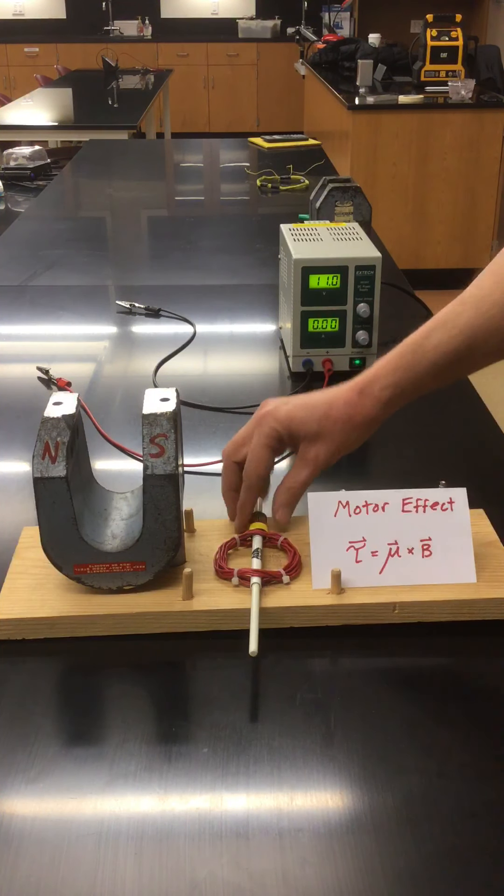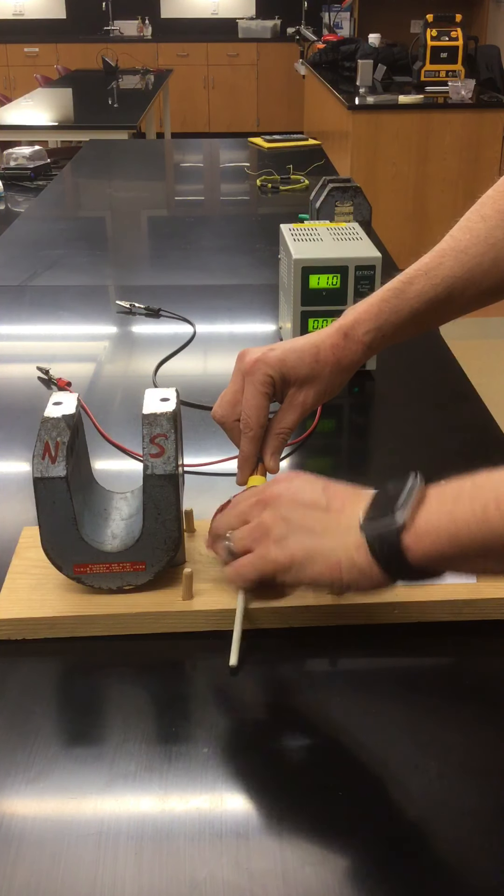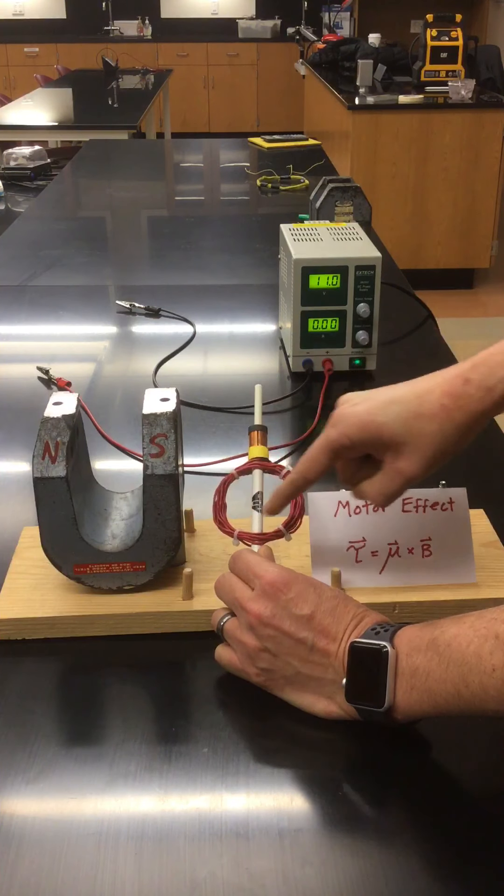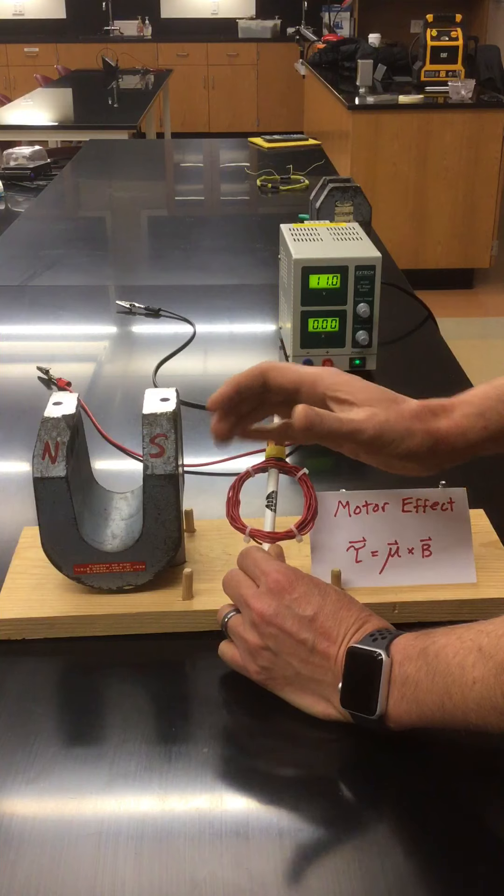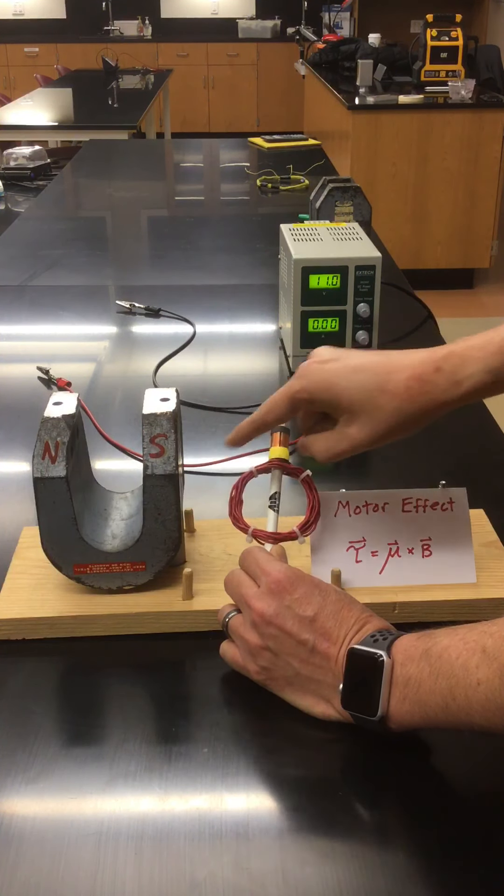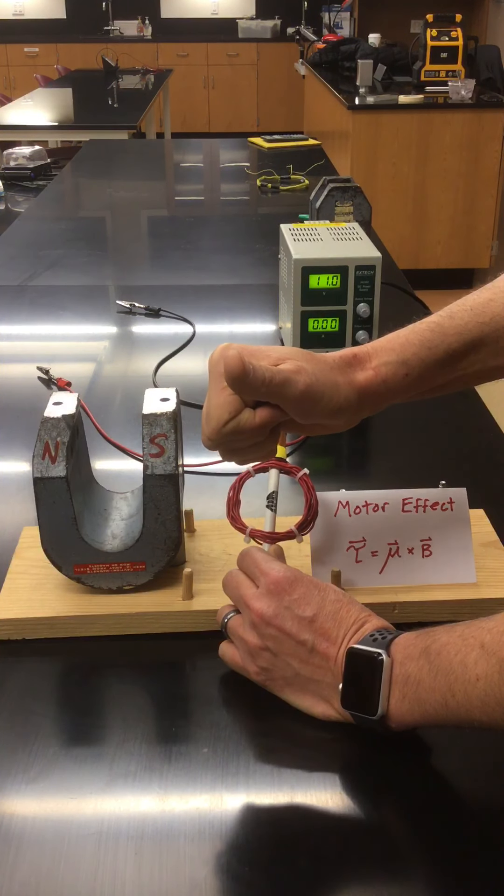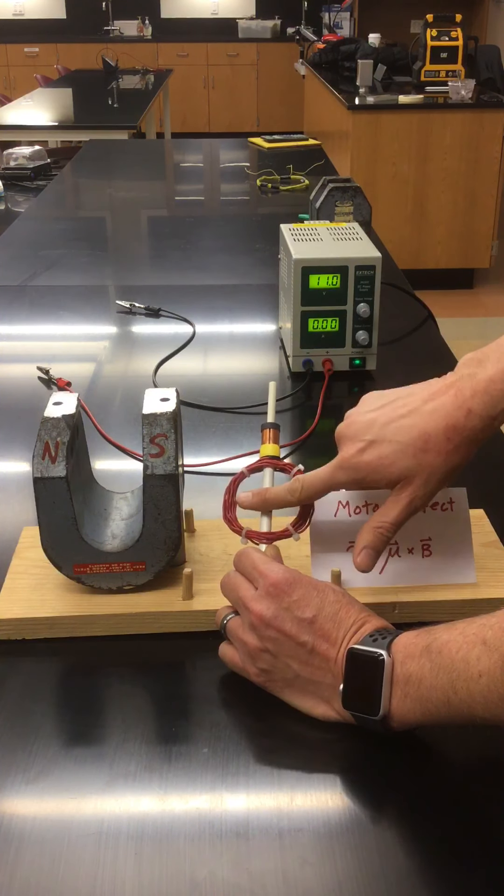So why is mu a vector? We can turn the area into a vector with a right hand rule. Let's say current flowed in this direction in this wire loop. We would take the fingers of our right hand and simulate a circle flowing counterclockwise. If the current was counterclockwise, our thumb would be pointing in the direction of a unit vector that's normal to the plane of the surface area.